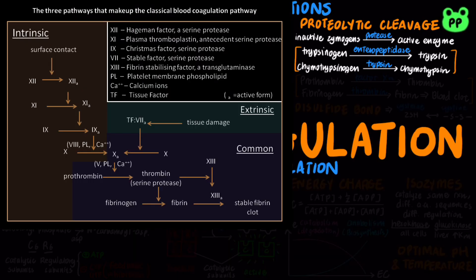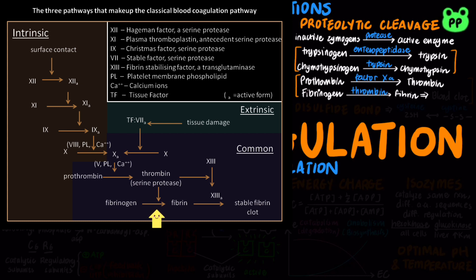The clotting cascade also involves proteolytic cleavage. Clotting factor X cleaves prothrombin into thrombin, which in turn cleaves fibrinogen into fibrin, which crosslinks to form the blood clot.